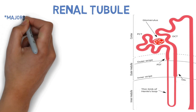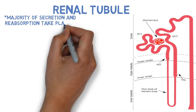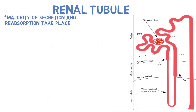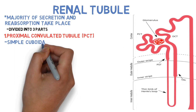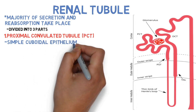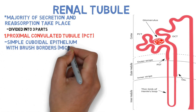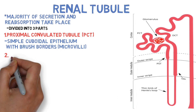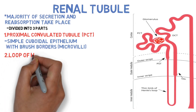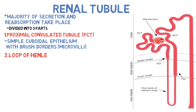Now let's come to the renal tubule. The renal tubule is the part of the nephron where the majority of secretion and reabsorption takes place. It is divided into three parts. The first is the proximal convoluted tubule, which is lined by simple cuboidal epithelium with a brush border or microvilli, and is present in the cortical region of the kidney. The second part is the loop of Henle, which is a U-shaped tube present in the medulla.